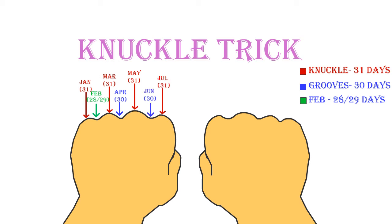July: 31 days. August: 31 days. September: 30 days. October: 31 days. November: 30 days. December: 31 days.